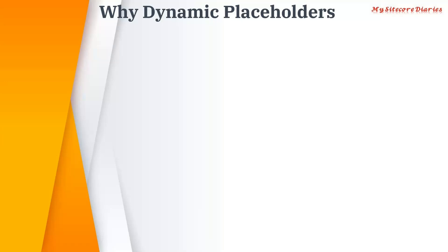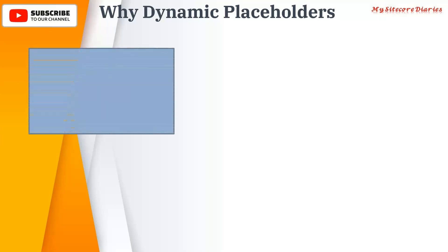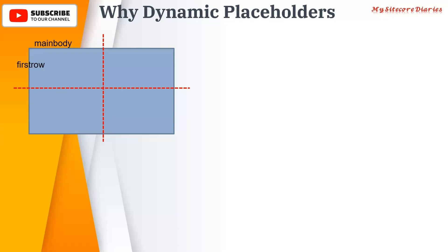Let's take an example. We have a page where we want to add two rows and two columns. The main body part is the first placeholder, and inside that we want to add different components. So the first placeholder is your main body, then you have a first row and a second row. In the first row, you have a right column and a left column.